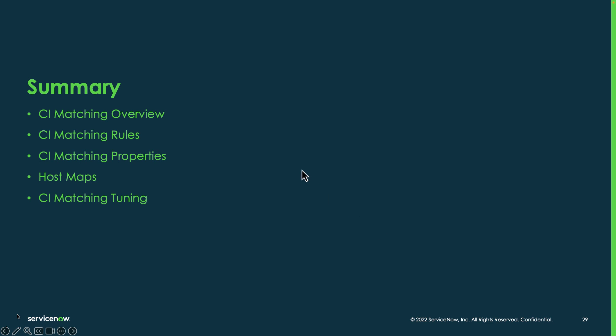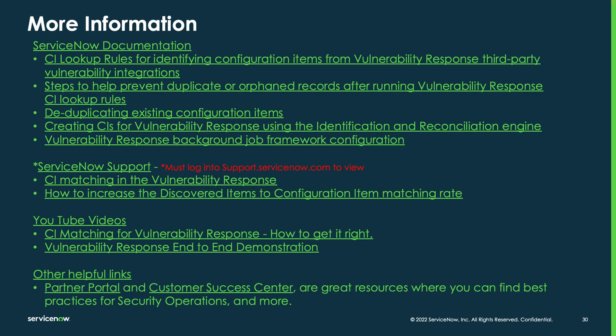In summary, we went through a lot of things today: CI matching overview, CI matching rules, CI matching properties, host maps, and tuning of your CI matching process. I've provided some more information and links with good resources on how to tune these things and work with this data. Hopefully this is helpful — I appreciate your time, and thank you for joining today.